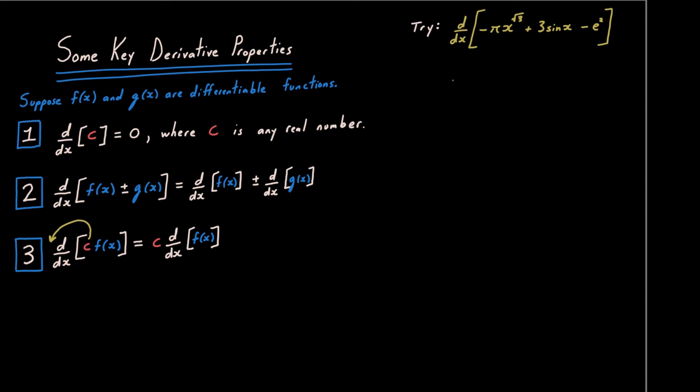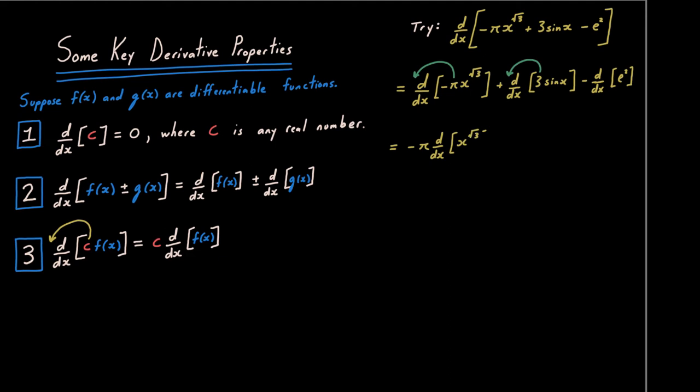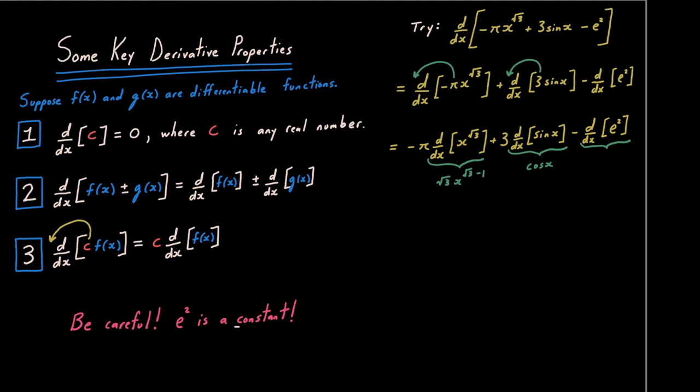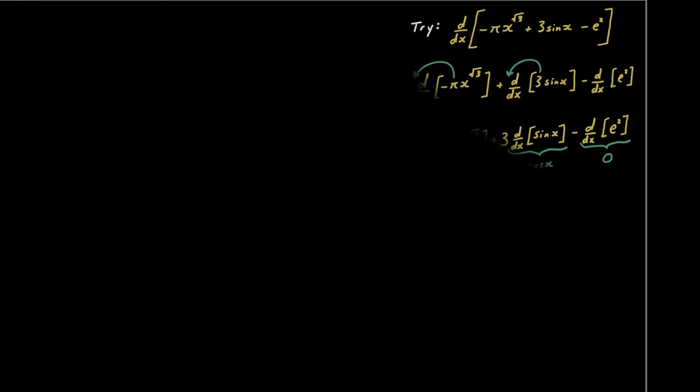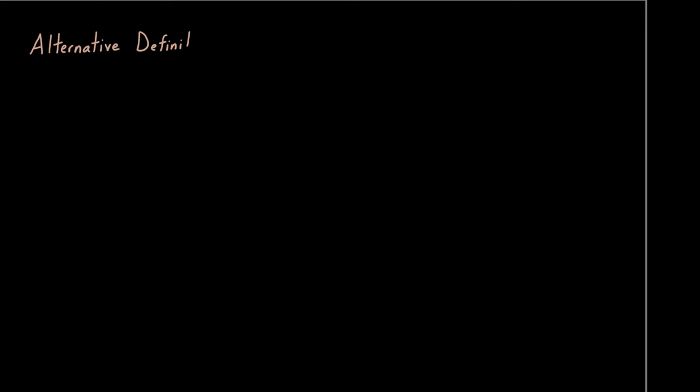Pause the video and try the next one on your own. Applying property two, break it into three derivatives. Property three lets us pull out −π and 3. The first term uses the power rule, the middle uses the trig rule. But be very careful — e² is a constant, so its derivative is 0. Do NOT apply the power rule to e² and get 2e. That's a very common mistake.